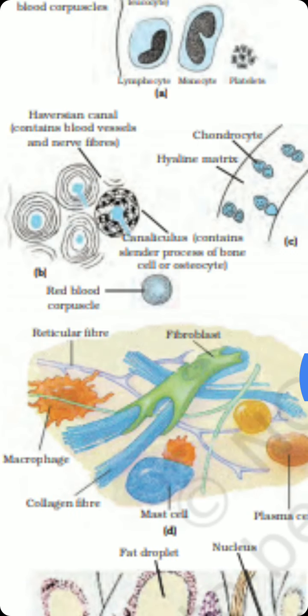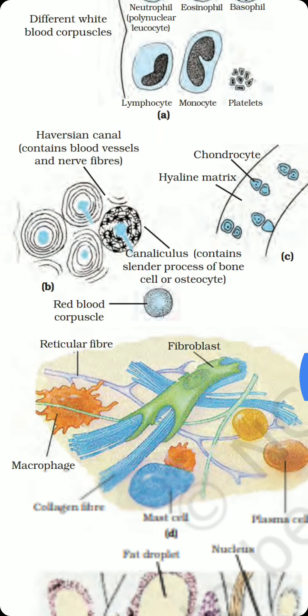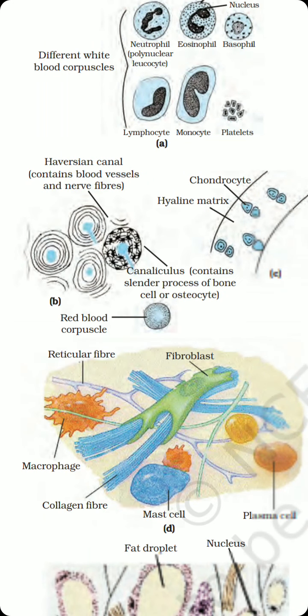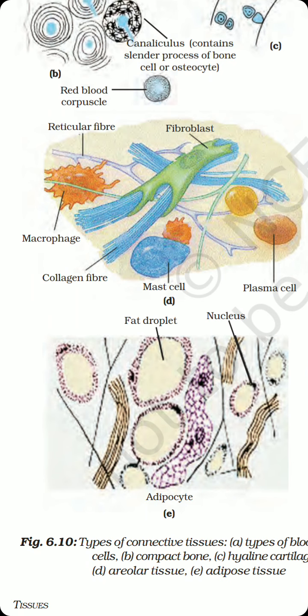The areolar tissue, as described in figure panel D, contains fibrous tissues — these fibers are meant for strength in the body. The areolar tissue fills the space between the muscles and internal organs and supports the internal organs against any kind of mechanical shock and injury.